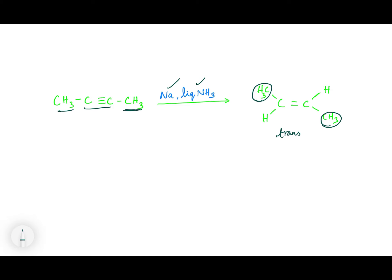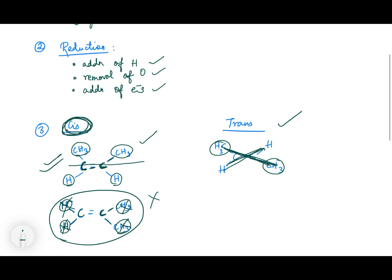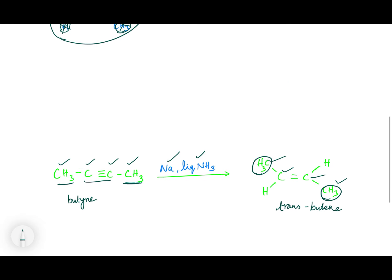Let's name the compounds. The reactant has four carbons with a triple bond, so it is butyne. The product has four carbons with a double bond in trans position, so it is trans-butene — meaning two similar groups are present on opposite sides.